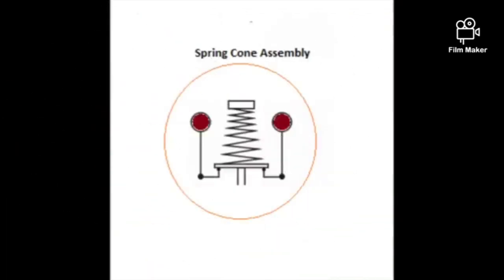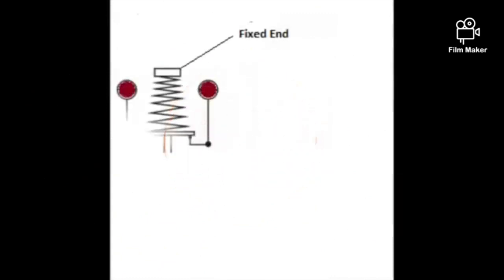In the spring cone assembly, the conical spring is attached to a fixed end on one side and to a floating end on the other side, along with a ball weight revolving around the spring.